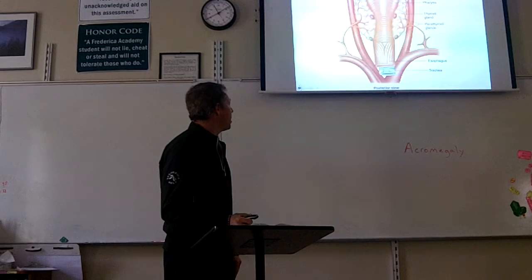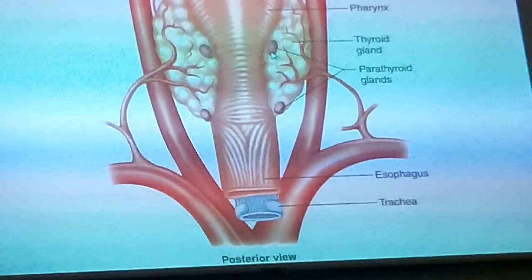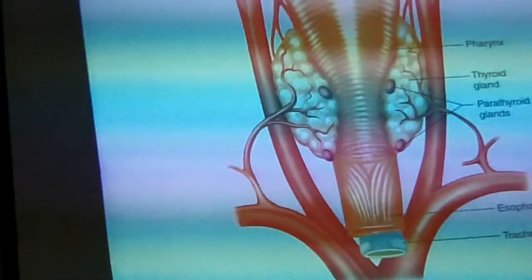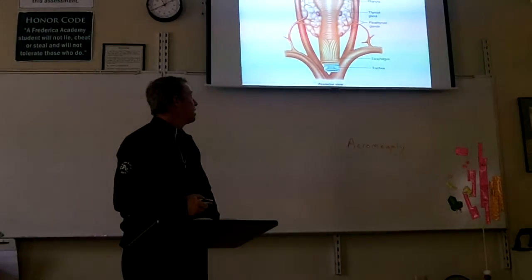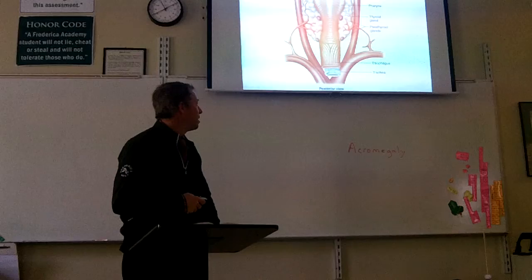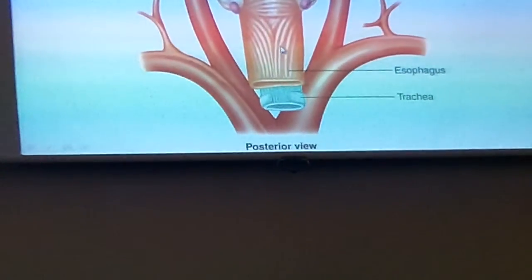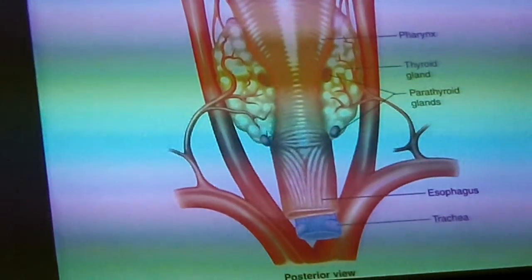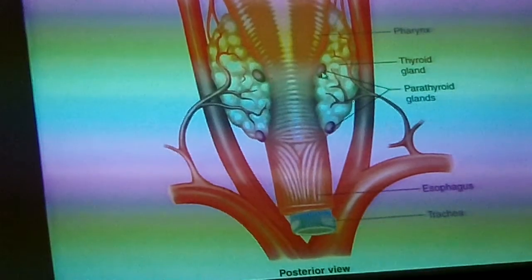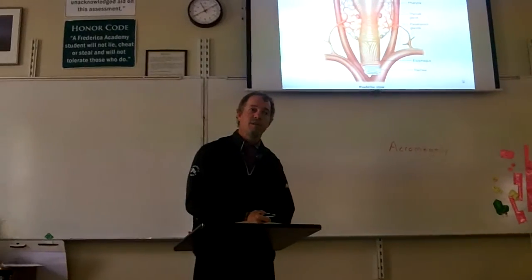Do you all remember the parathyroid glands? These little dots on the back of the thyroid gland. The thyroid gland is around your throat. And it curls around the trachea and the esophagus. Here's the trachea in the front, and this is the esophagus in the back. This is looking from behind, you see.